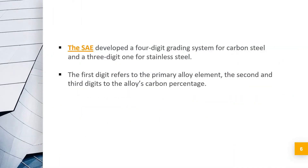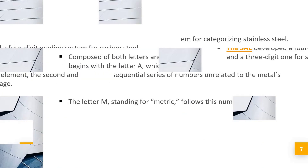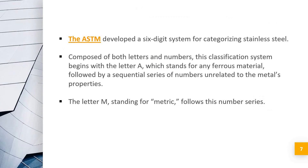SAE developed a four-digit grading system for carbon steel and a three-digit system for stainless steel. The first digit refers to the primary alloy element, and the second and third digits refer to the alloy's carbon percentage. ASTM developed a six-digit system for categorizing stainless steel.